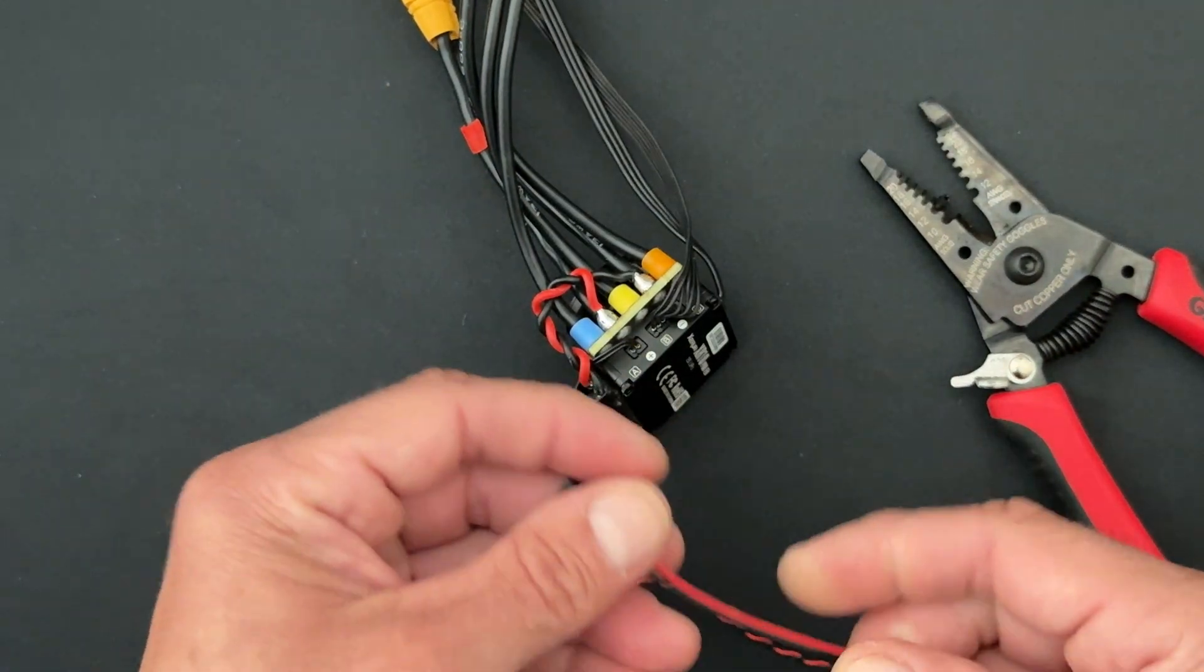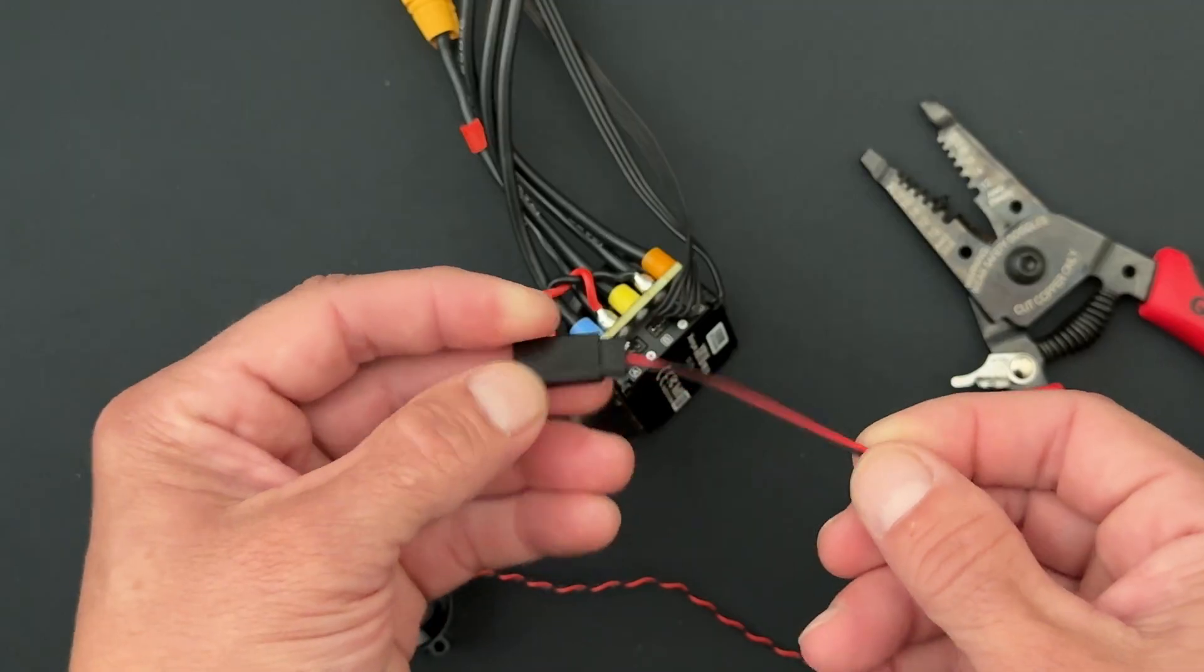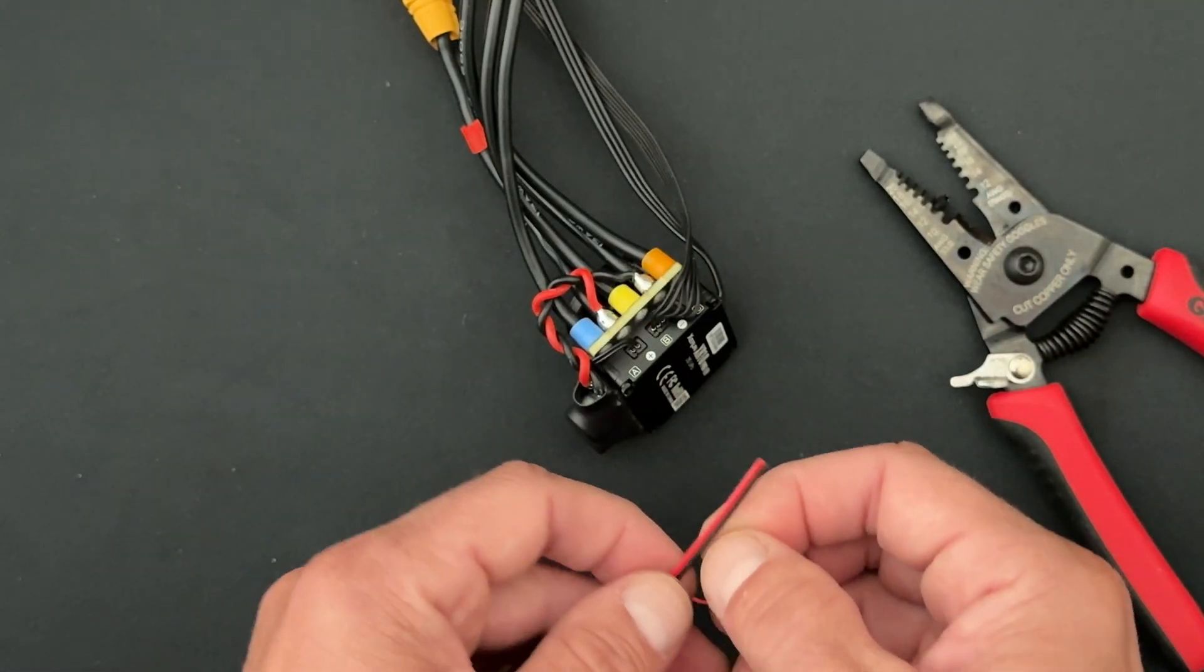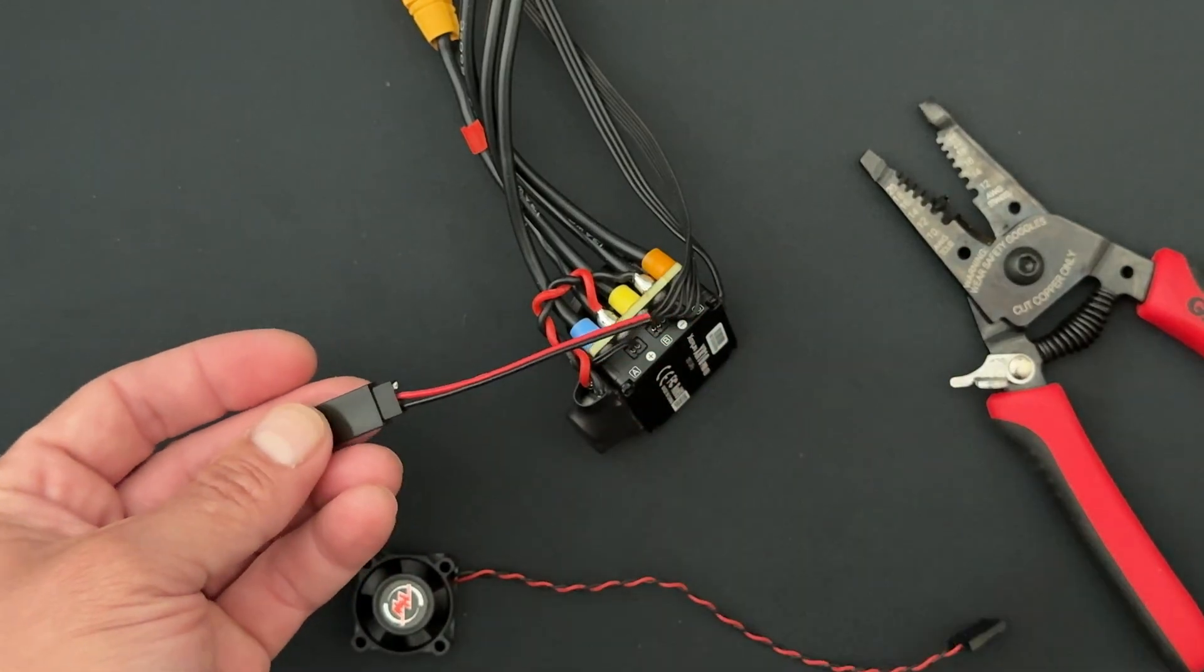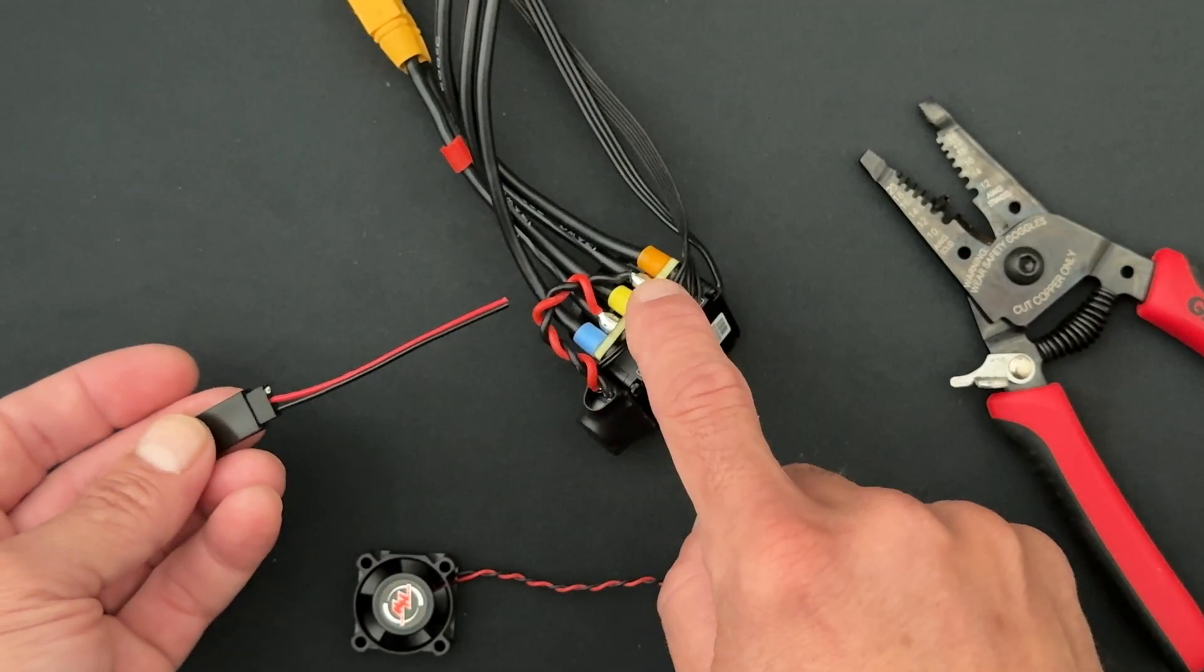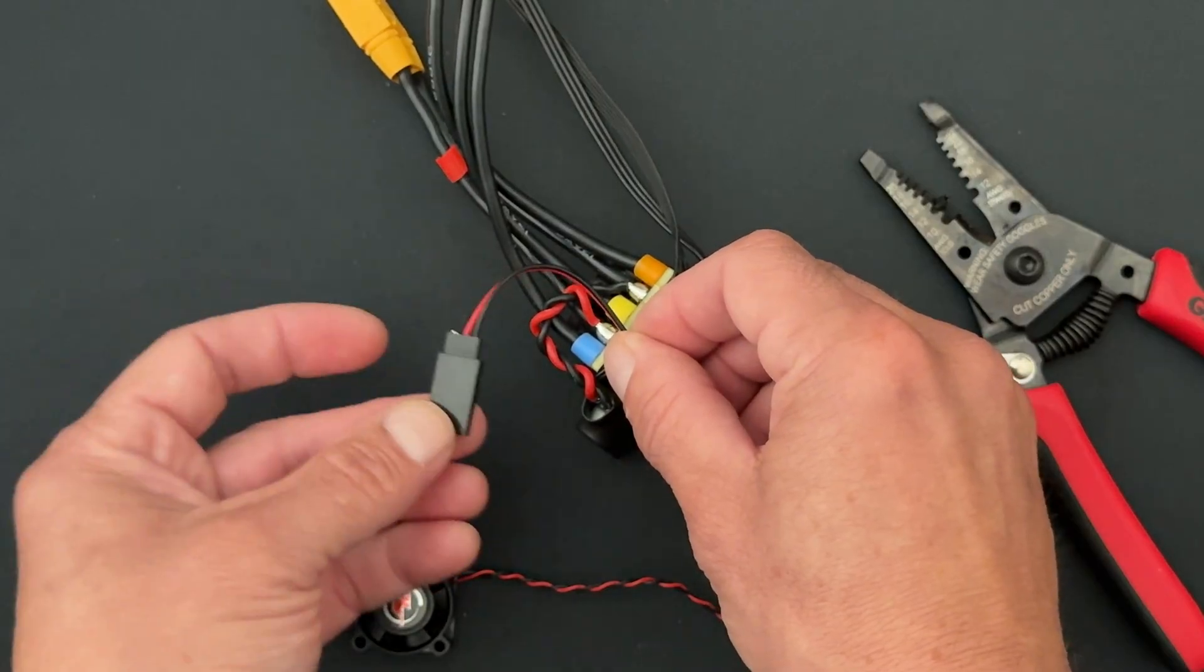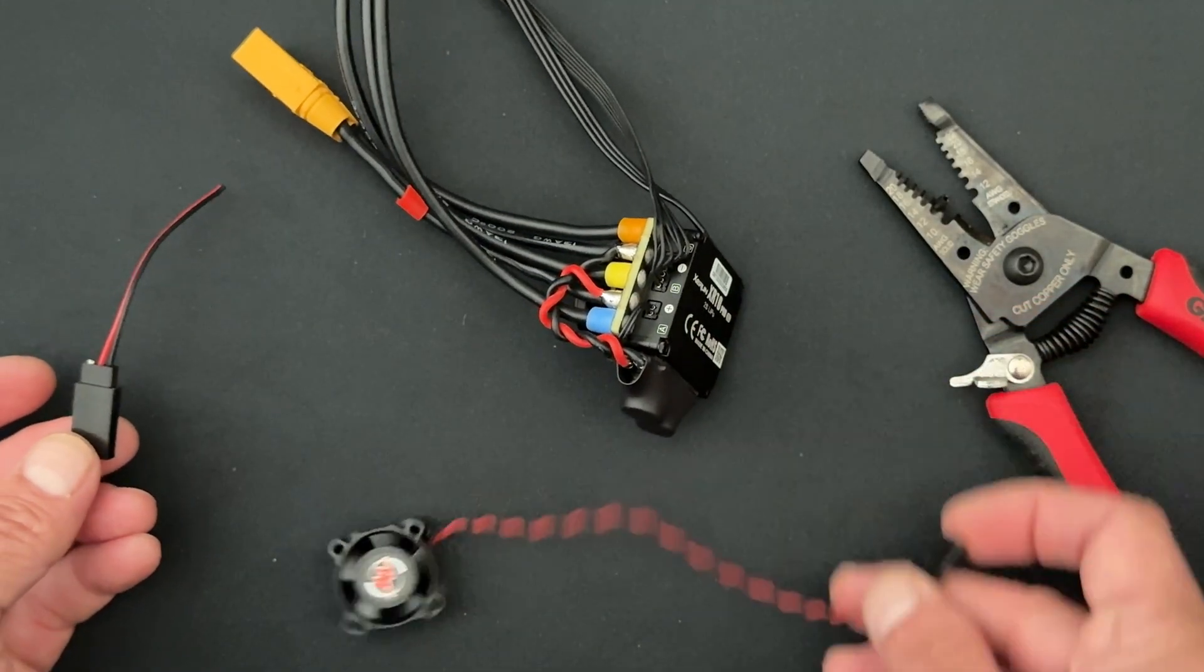The best way that I found is to get yourself a JST plug, or this is actually an old servo extension that I cut in half with just the red and black wires on there. Essentially what you do is you solder onto the same tabs that the battery wires are soldered to. That way you've got this little plug in your car and you can plug your cooling fan into it.